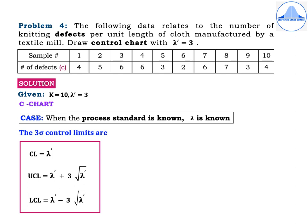Problem 4. The following data relates to the number of knitting defects per unit length of cloth manufactured by a textile mill. Draw a control chart with lambda dash = 3. The sample numbers are from 1 to 10, and the number of defects corresponding to each sample are: 4, 5, 6, 6, 3, 2, 6, 7, 3, 4. Given K = 10 and lambda dash = 3.